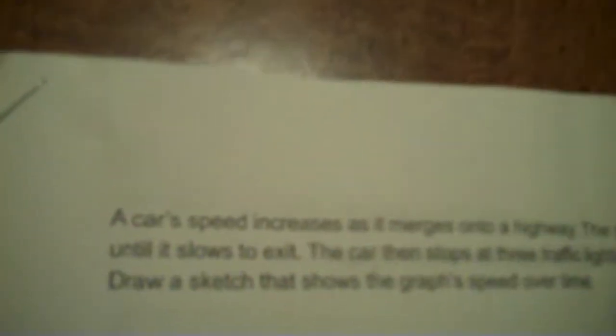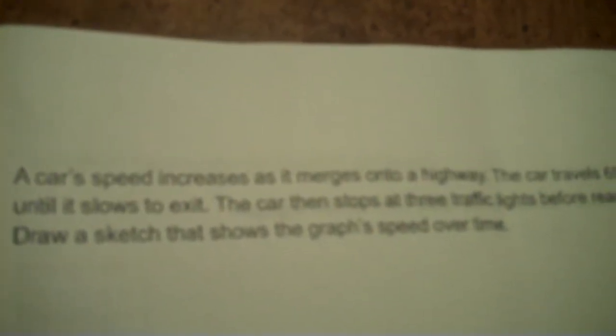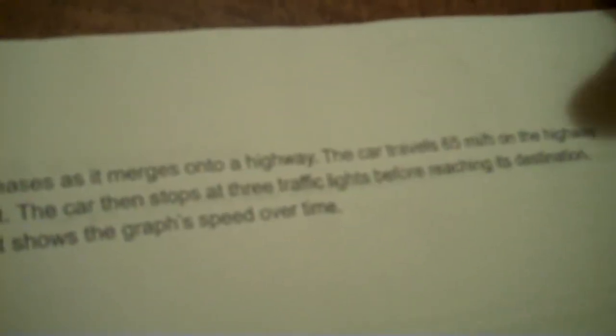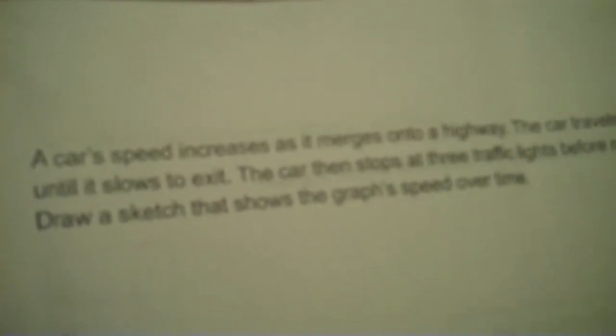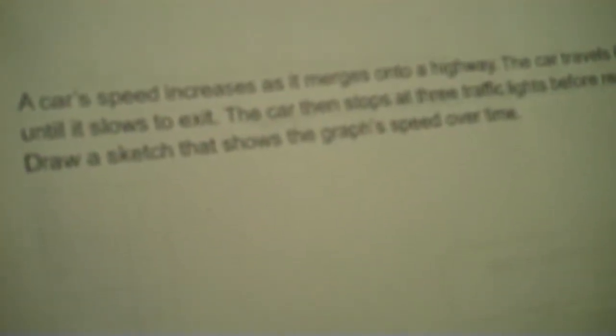Okay, here it is. Unit 5. This is going to be a short assignment. Don't take notes on this page. A car's speed increases as it merges onto a highway. The car travels 65 miles per hour on the highway until it slows to exit. The car then stops at three traffic lights before reaching its destination. Draw a sketch that shows the graph's speed over time.